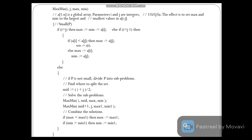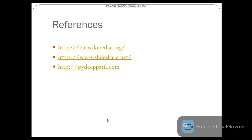If the problem is not small, we divide it into sub-problems by finding the midpoint: mid = (i + j) / 2. We then recursively call MaxMin(i, mid) to get Max and Min, and MaxMin(mid+1, j) to get Max1 and Min1. To conquer, if Max is less than Max1, then Max = Max1; if Min is greater than Min1, then Min = Min1. References used include wikipedia.org and slideshare.net, and solutions are available at jjpatil.com. Thank you for watching this video.